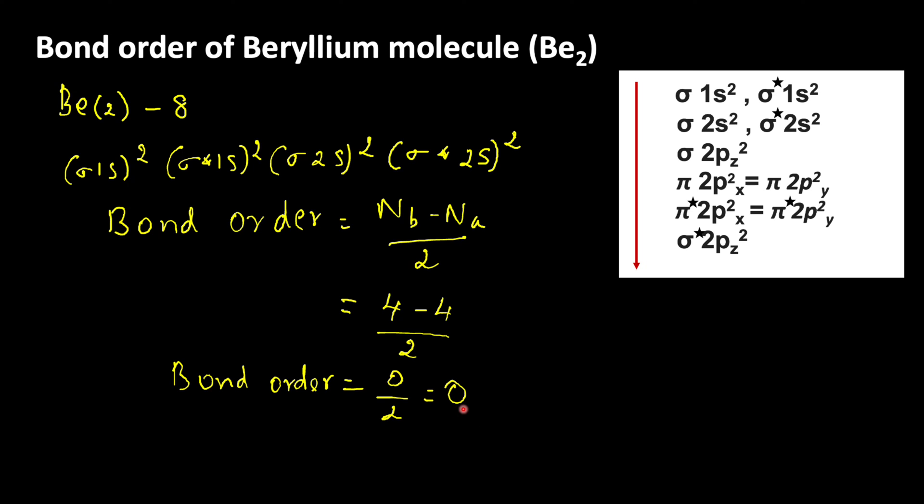Bond order helps to understand the number of bonding in a molecule. Since beryllium molecule has zero bond order, there is no possibility of bonding between the beryllium atoms. Therefore, beryllium molecule does not exist. Thanks for watching.